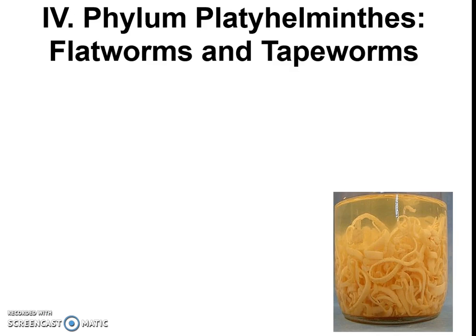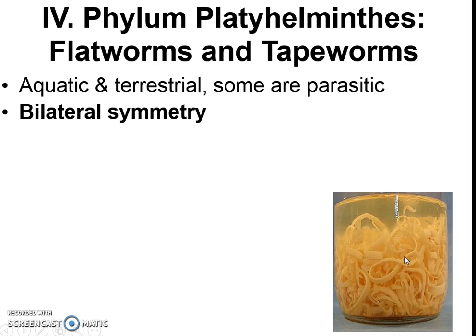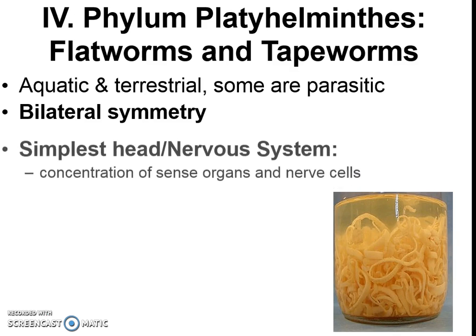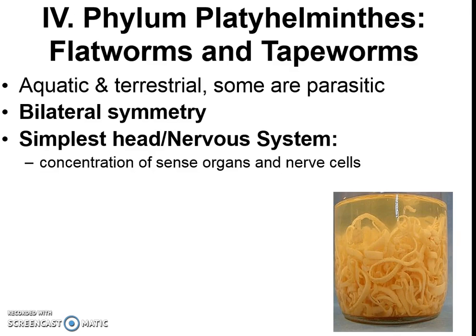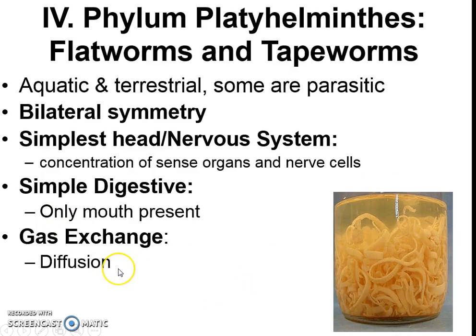Moving to a little bit more complex: phylum Platyhelminthes — you don't need to know how to say or write that. We call these the flatworms and tapeworms. They're mostly aquatic and terrestrial parasites and they're really flat-looking. They have bilateral symmetry and are the first group to have a simple head or simple nervous system, meaning they have some sense organs or nerves at one end that can sense things like light. They still have a simple digestive system with only one combined mouth and anus opening, and gas exchange is still through diffusion.